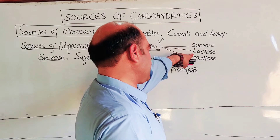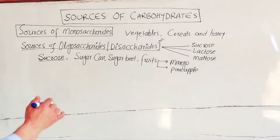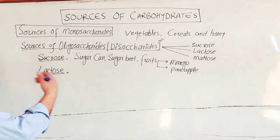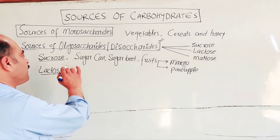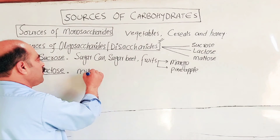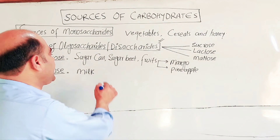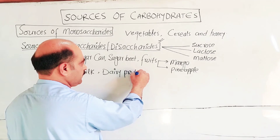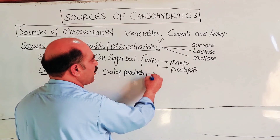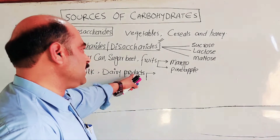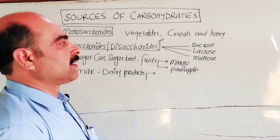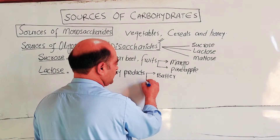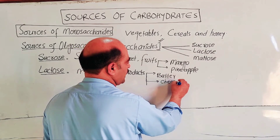The second disaccharide is lactose. Lactose means milk sugar. The main source of lactose is milk and dairy products, including butter, cheese, paneer, and curds.